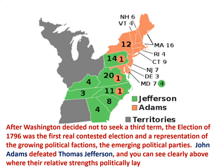In the end, John Adams defeated Thomas Jefferson, and you can see by the electoral map here where their relative strengths lay politically. The pink-brownish color up top in the north is for Adams, and the green in the back in the frontier and the south is for Jefferson.